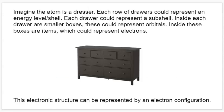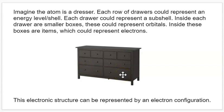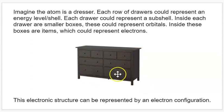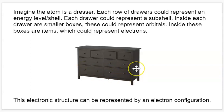An analogy to think about this: atoms are kind of like a dresser. Each dresser has rows of drawers, and there are different drawers at each row, and maybe little boxes inside the drawers where you can store things. In this analogy, each level of the dresser is like one of the energy levels. The different drawers are like subshells. And if you imagine boxes within the drawers, those are like the orbitals — the individual places you actually put electrons.